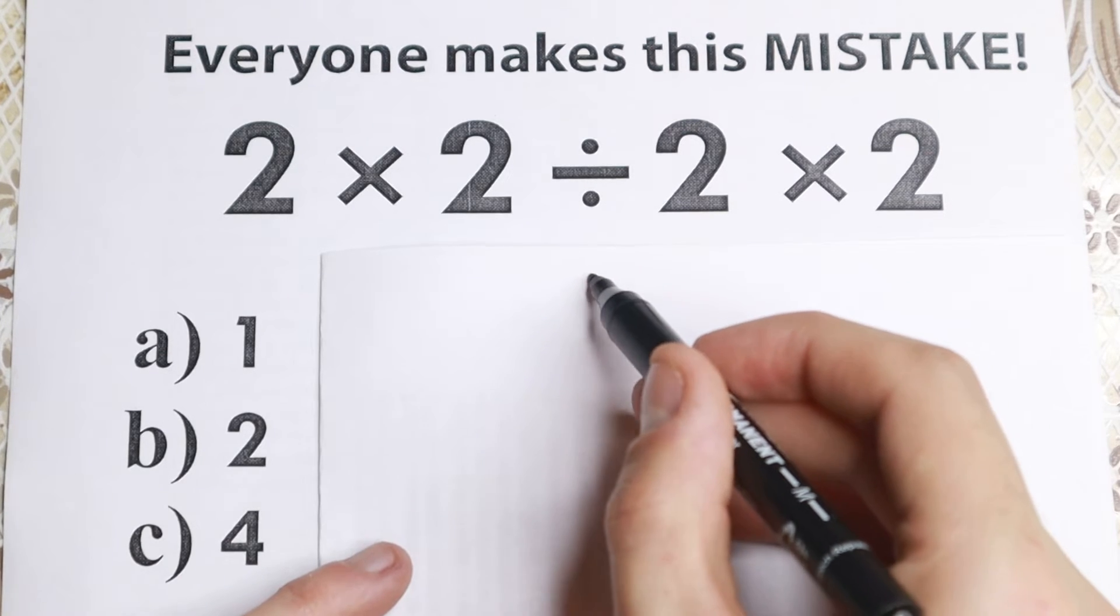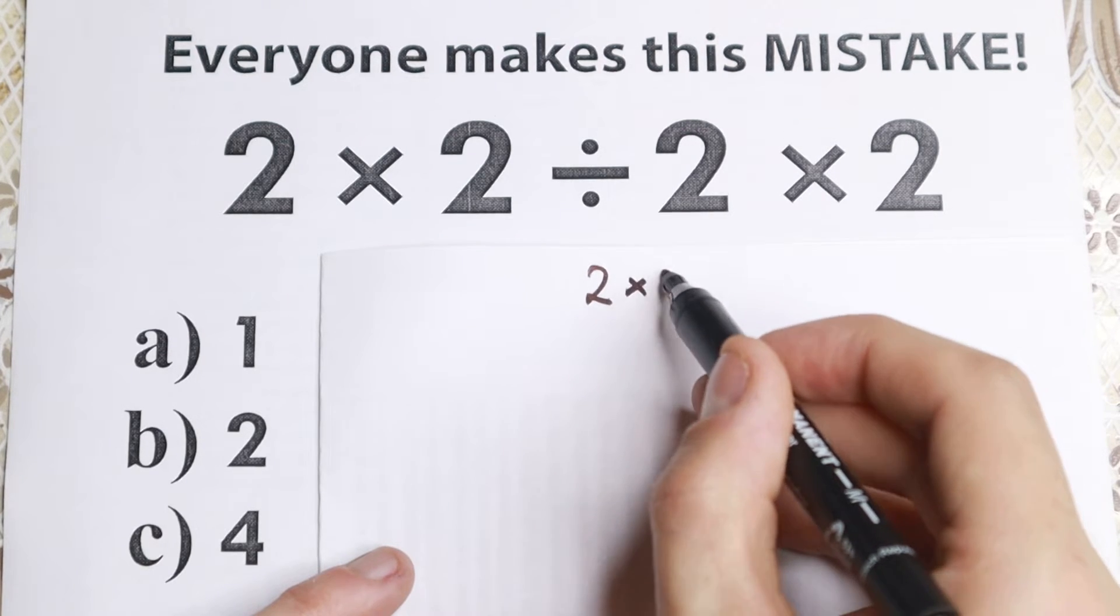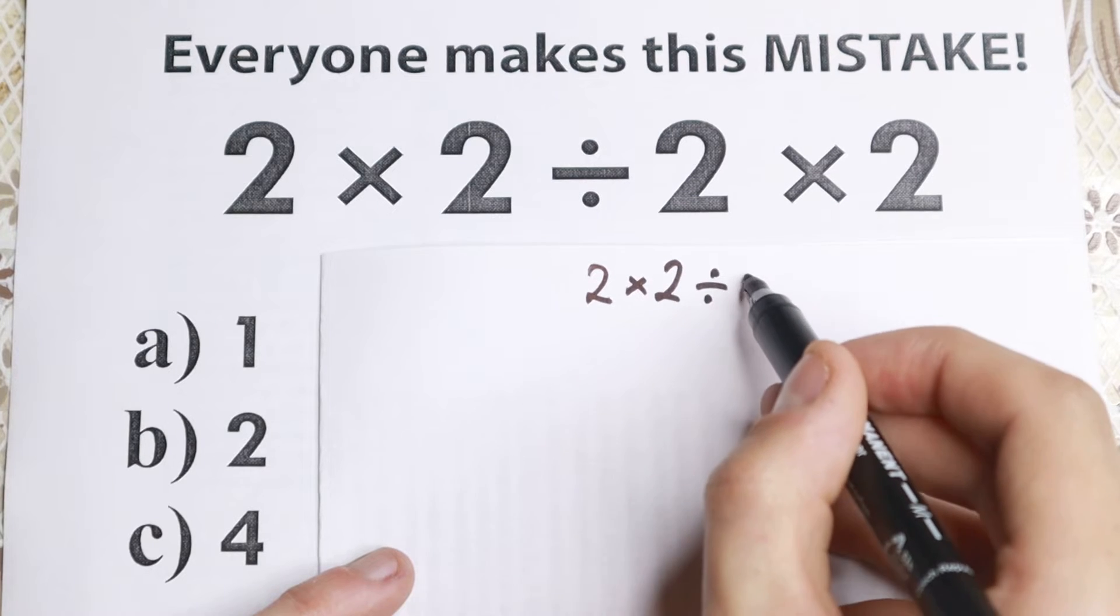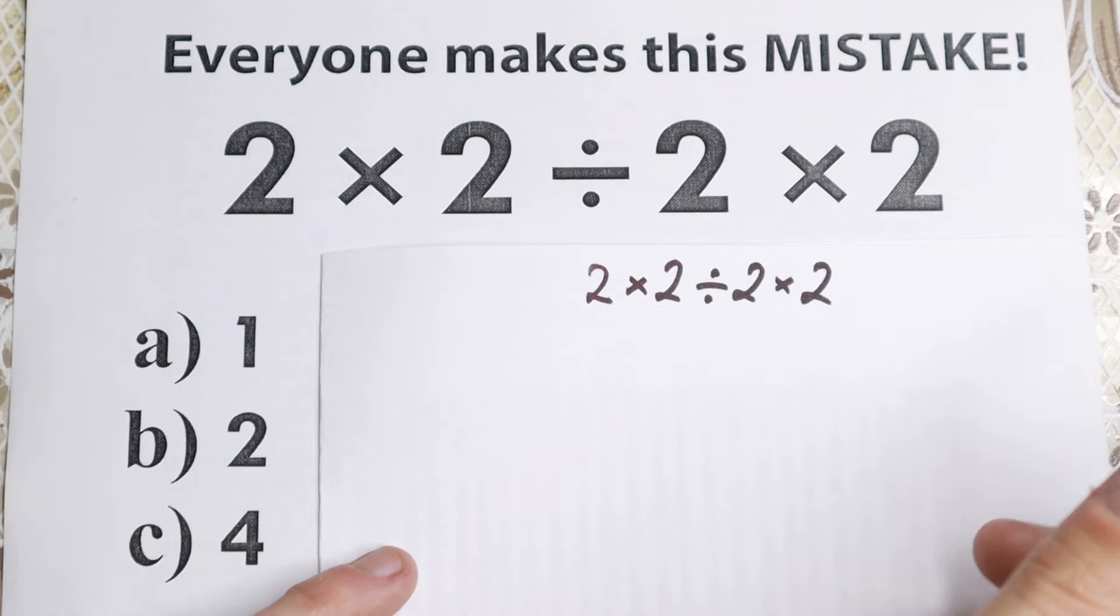So here is a problem. We have 2. I rewrite this problem: 2 times 2 dividing by 2 and times 2. So here is a problem. So what is the first approach to solve this problem?